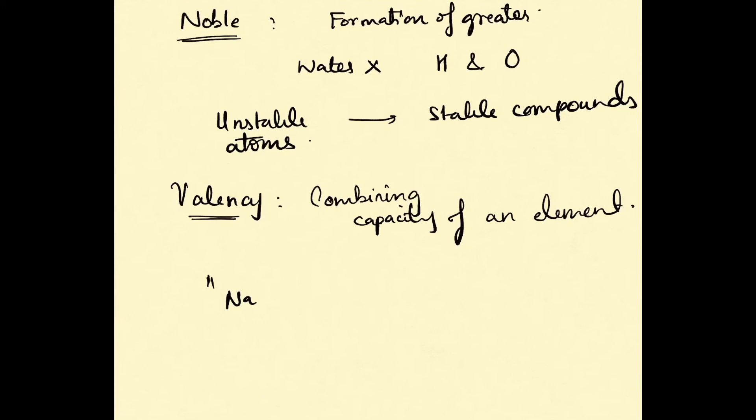Sodium's electronic configuration is 2, 8, 1—it has one electron in its outermost shell. Rather than gaining seven electrons (a -7 charge), it would prefer having a +1 charge by losing the one electron, which is more energy efficient.